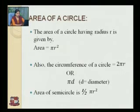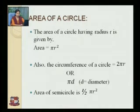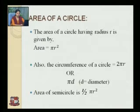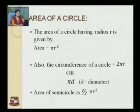Next is area of circle. The area of a circle having radius r is given by pi r squared. Also, the circumference of a circle is 2 pi r, which equals pi into 2r. Since 2r equals d, the diameter of the circle, the circumference of the circle can also be written as pi into d, where d is the diameter of the circle.